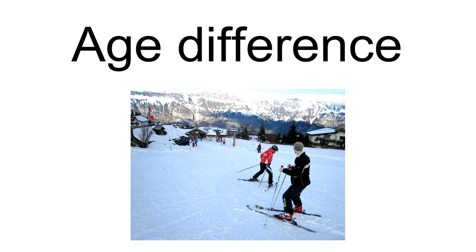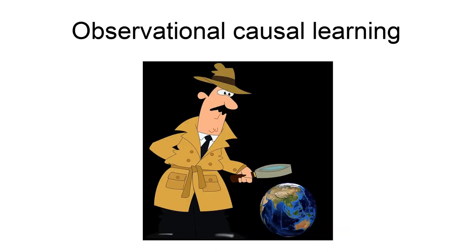Humans use observational and causal learning to watch other people's actions and use the information gained to find out how something works. A study of 25-month-old infants found that they can learn causal relations from observing human interventions, and also learn by observing normal actions not created by intentional human action. Observational learning is presumed to have occurred when an organism copies an improbable action or outcome it has observed and the matching behavior cannot be explained by an alternative mechanism.